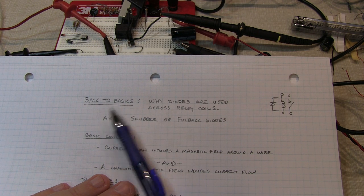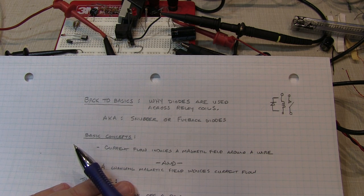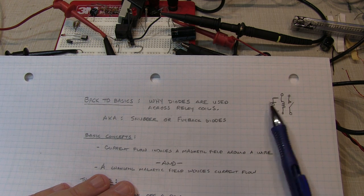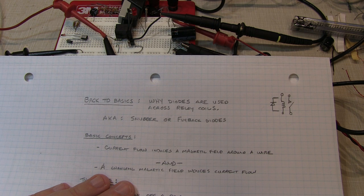Today's video is a back-to-basics topic that's a question asked quite often: why we have to put diodes around relay coils, also called snubber diodes or flyback diodes.